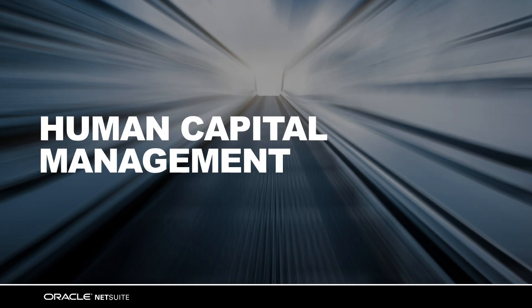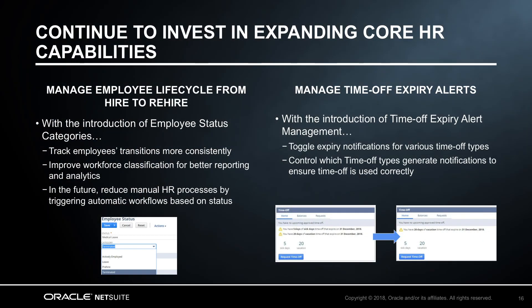Let me cover the highlights in the human capital management area. In the 19.1 release, we're continuing to invest in expanding core HR capabilities. Previously, there was no standardized way to track the transitions an employee has as they move through the stages of their employee lifecycle. With the introduction of employee status categories such as pre-hire and active, NetSuite will be able to track employee transitions with improved consistency to create better reports and analytics to help you understand your workforce. Most importantly, employee status categories allow the organization to come to alignment on the definition of an active employee, and in the future, status categories will reduce manual HR processes by triggering automatic workflows such as onboarding processes.